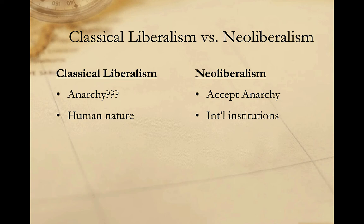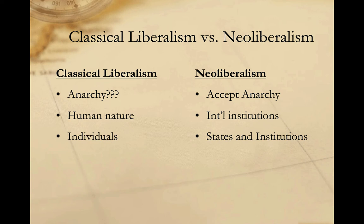Another important difference between classical and neoliberalism is rooted in the question of who are the most important actors in global politics. Classical liberalism tends to emphasize the importance of individual agents as actors in global politics; individual choices and psychology tended to play an important role in classical liberal explanations and analyses. By contrast, neoliberalism tends to accept the realist assertion that the state is the most important actor, though they added international institutions essentially as collections of states as well. Neoliberals accepted the realist claim that the state was a rational actor engaged in a cost-benefit analysis in pursuit of defined goals — a claim classical liberals would not necessarily be comfortable with.